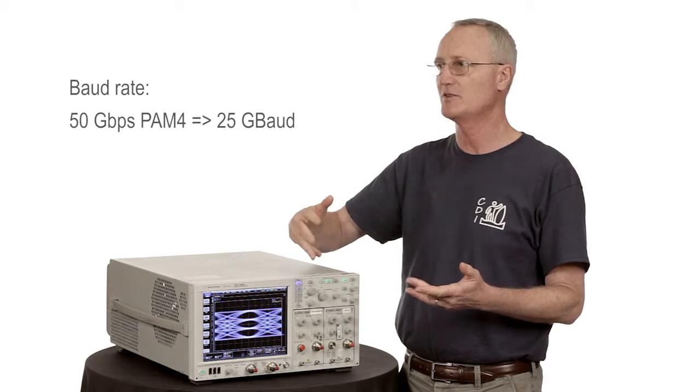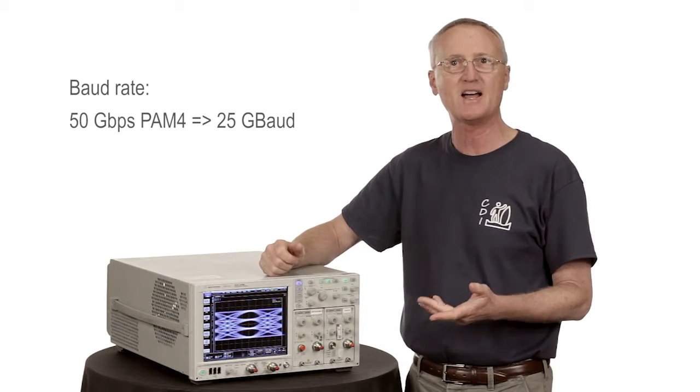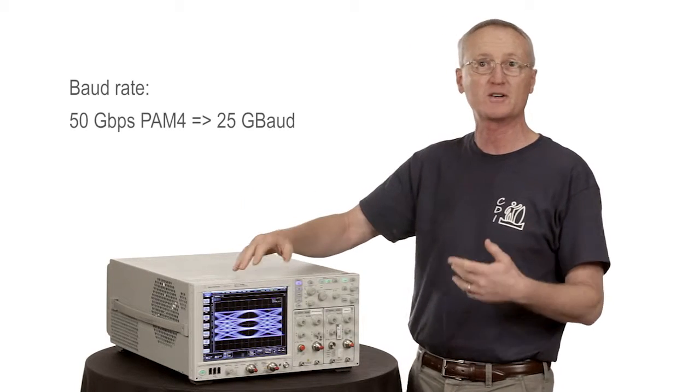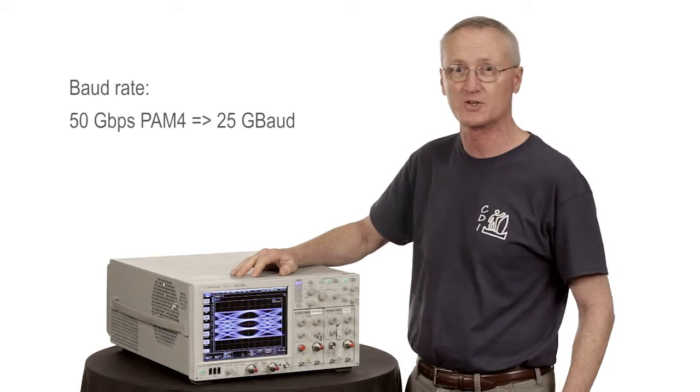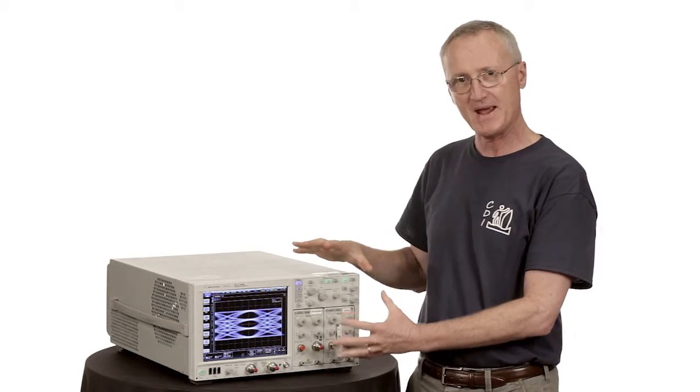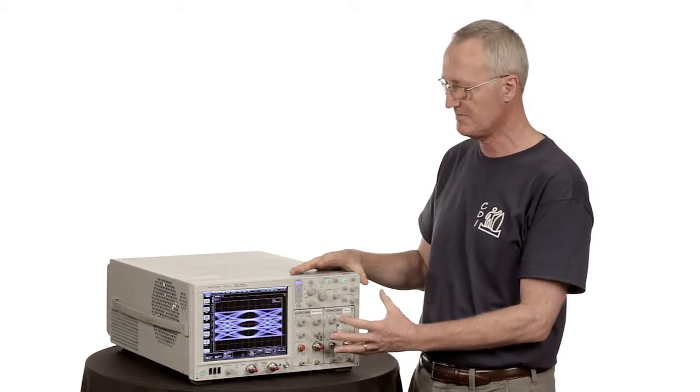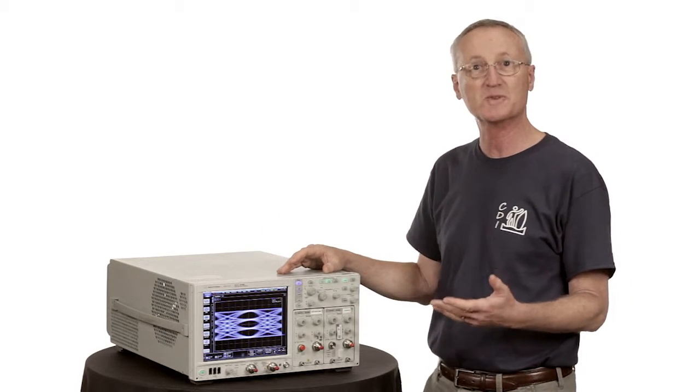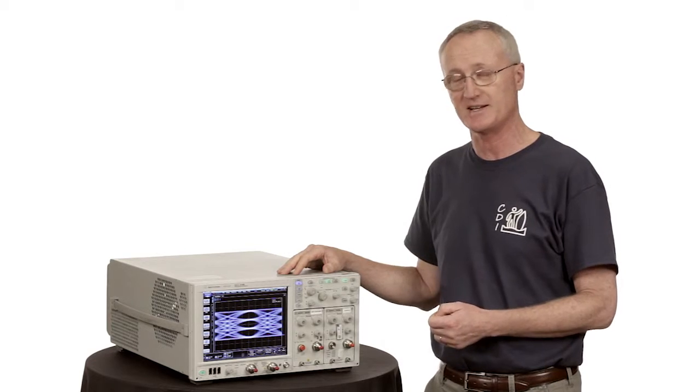If we were to look at the third harmonic of that, we'd be on the order of 37 gigahertz. Even up to the fifth harmonic, you're a little bit above 60 gigahertz. So in terms of configuring a bandwidth in the DCA to make that measurement, we have a lot of flexibility and plenty of range to make those measurements even up to 50 gigabit per second.